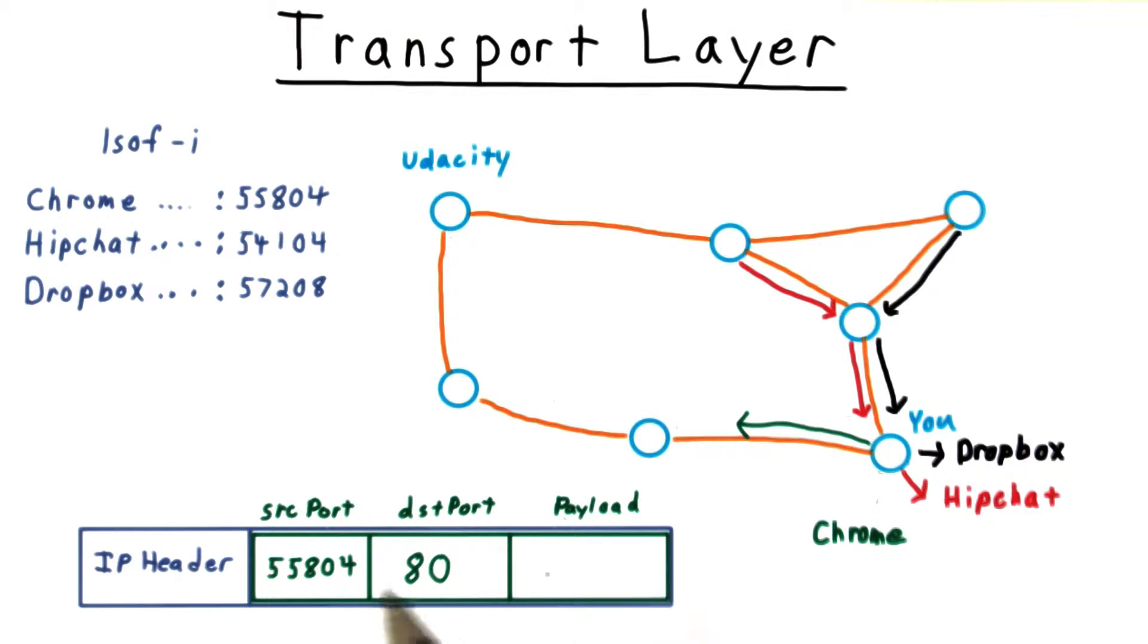It then sends the request in a packet with a source port of 55804 and a destination port of 80. When the Udacity server responds, it will send back a packet whose destination port matches the one that we sent. That way, the OS will know to route the packet to Chrome and not to some other program.